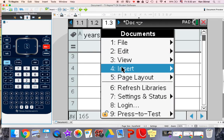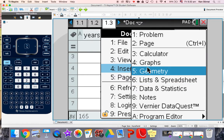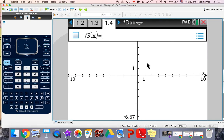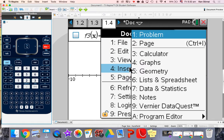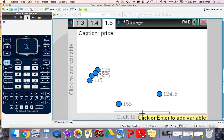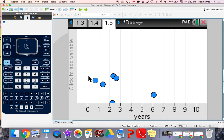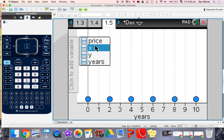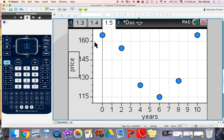So dock, insert, data and statistics. Remember the common mistake to make is doing a graph. We're not drawing a graph. We're fitting models to data. So you've got to plot the data. Dock, insert, data. And it's all there already. This is years and this is the house prices.